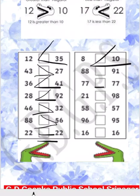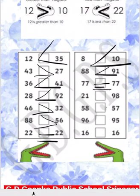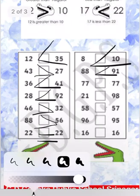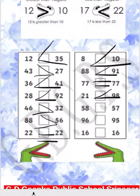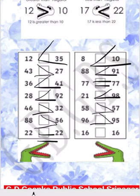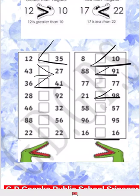We have number 78 from the left side and number 77 from the right side — the alligator will show the equal sign and open its mouth from the front. We have number 21 and number 28. We have 58 and 57 — the alligator will open its mouth from 58 because 58 is the larger number. We have 96 and 95 — the alligator will open its mouth from 96. We have 16 from the left side and 16 from the right side — the alligator will show the equal sign because both numbers are the same.